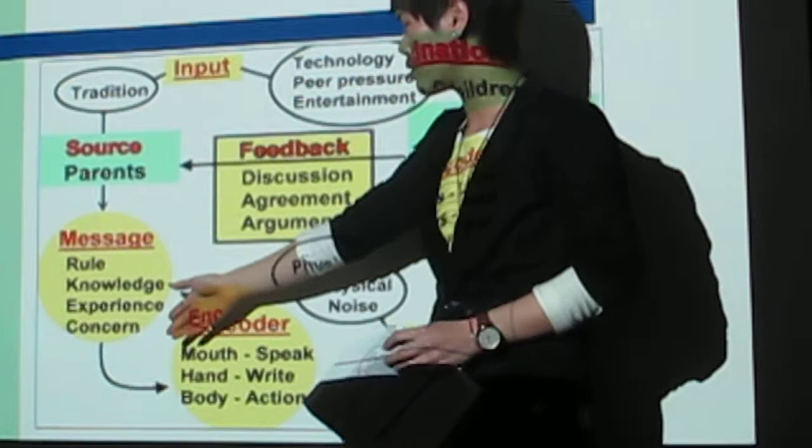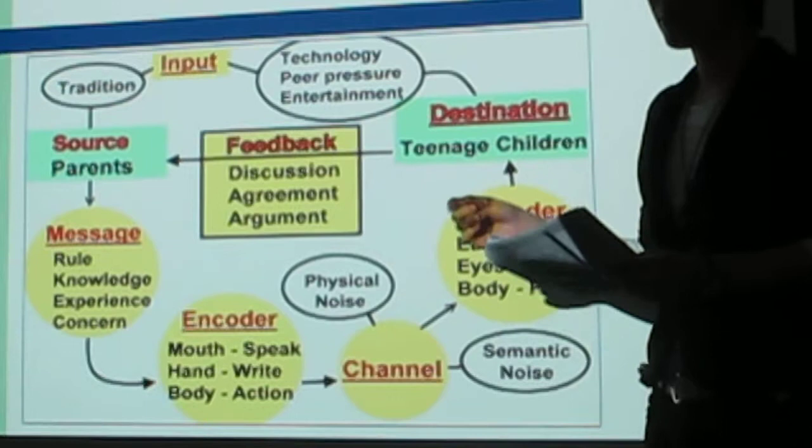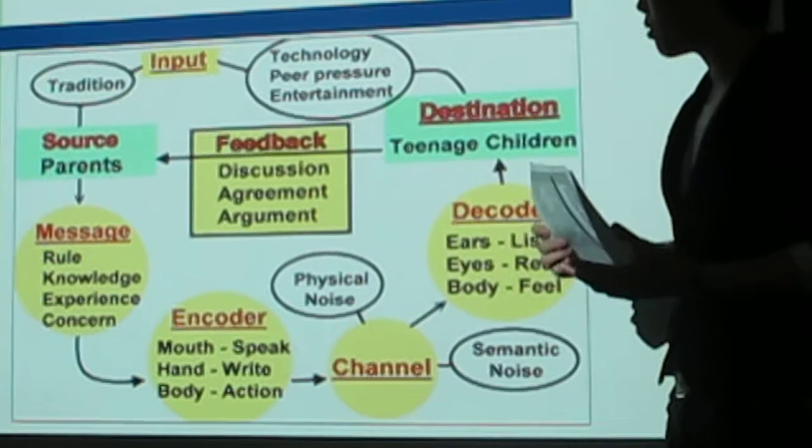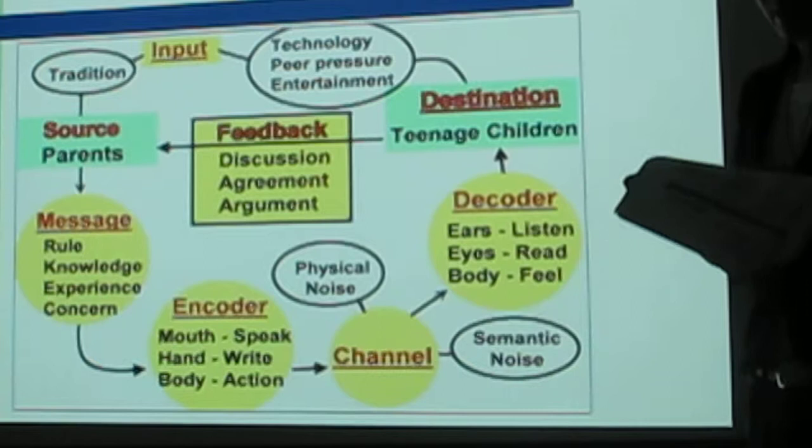Because there is the mouth, they can speak to their children. And the hand, sometimes they can write letters to their children. Or body to show the action. Then we have the channel. In the channel there are two noises: one is physical noise, which means sound, and semantic noise, which includes attitude, facial expression, or eye contact.